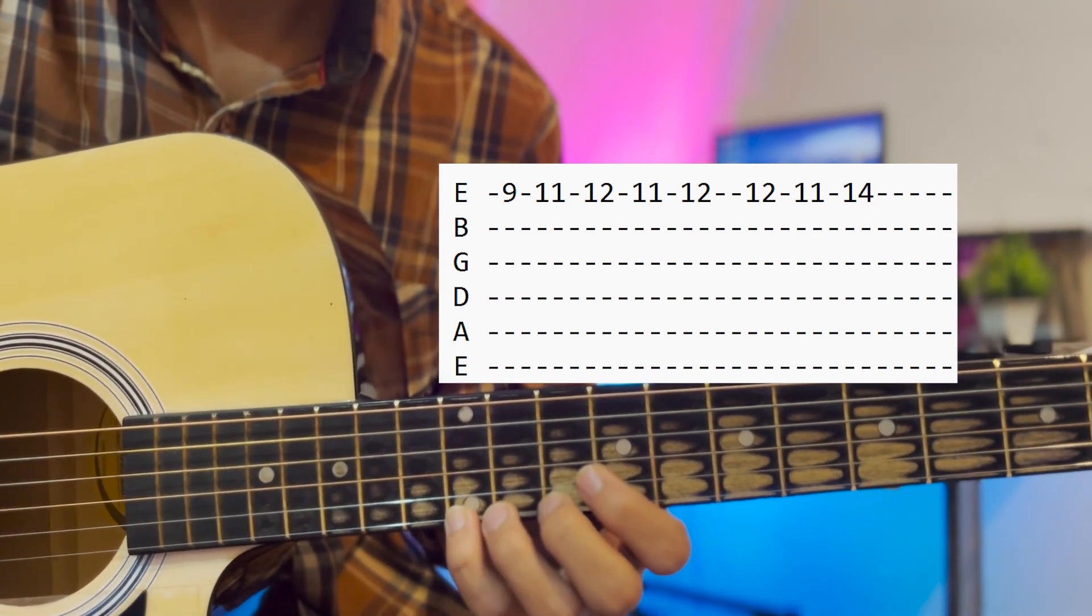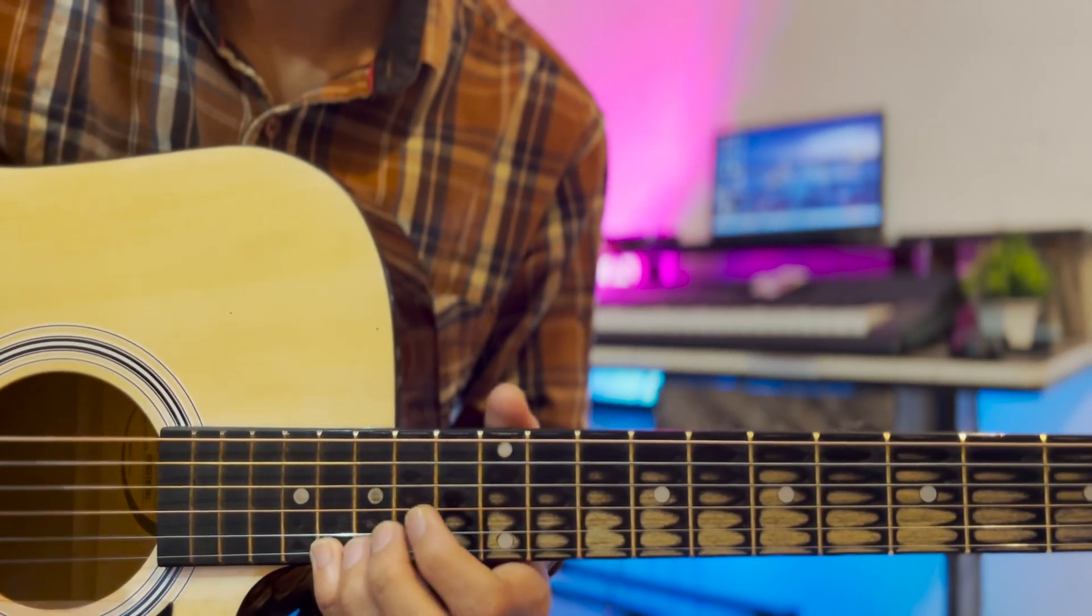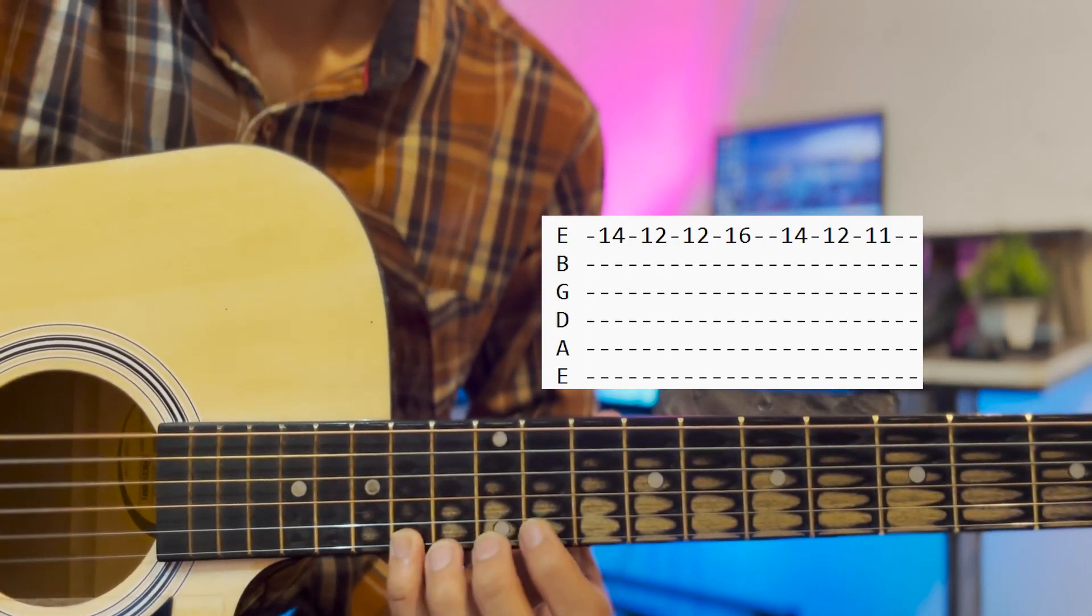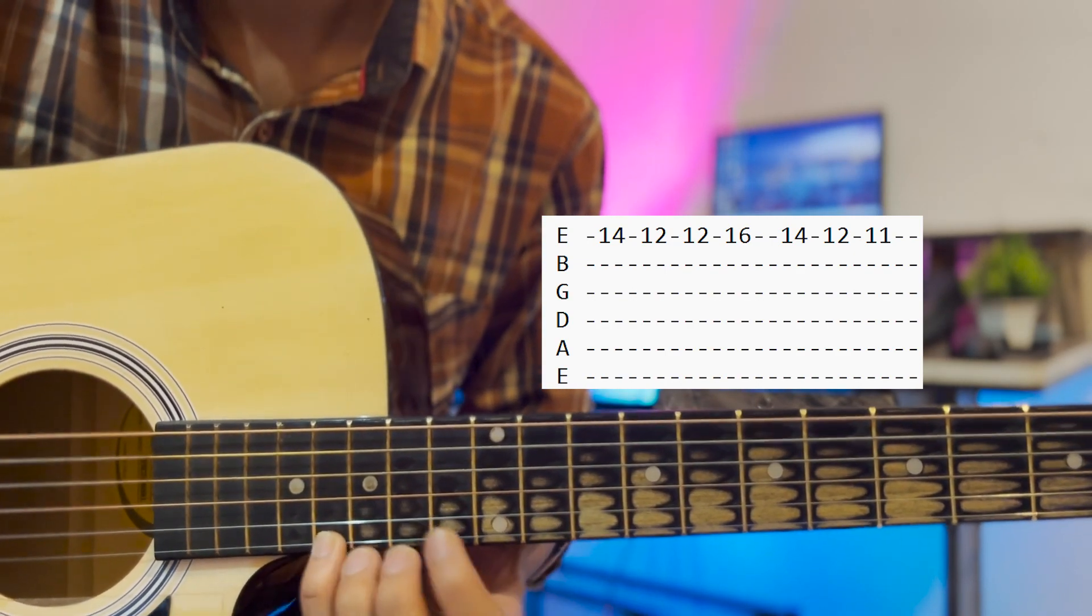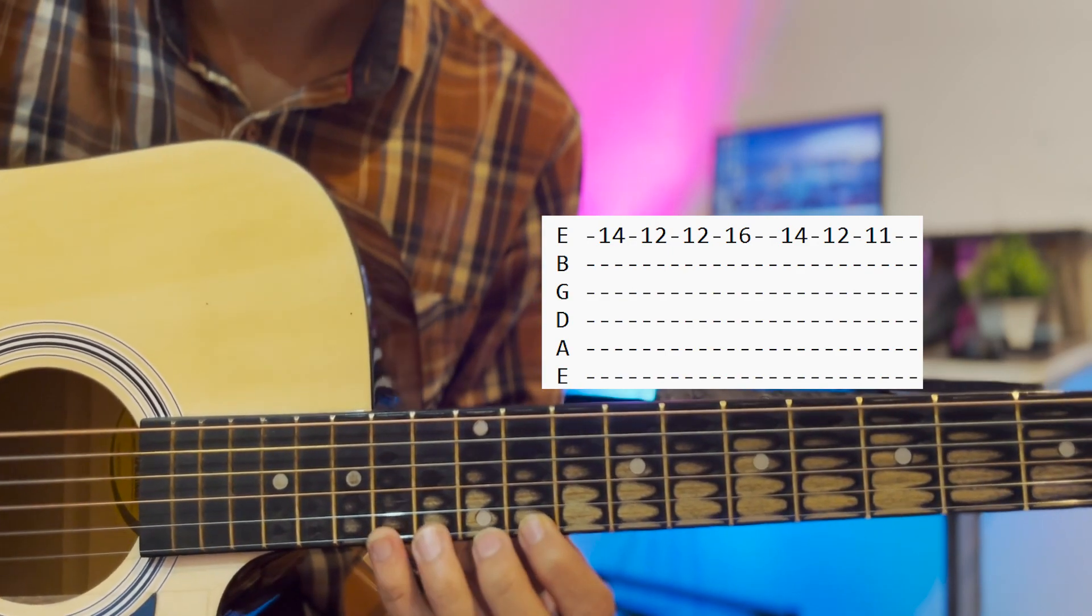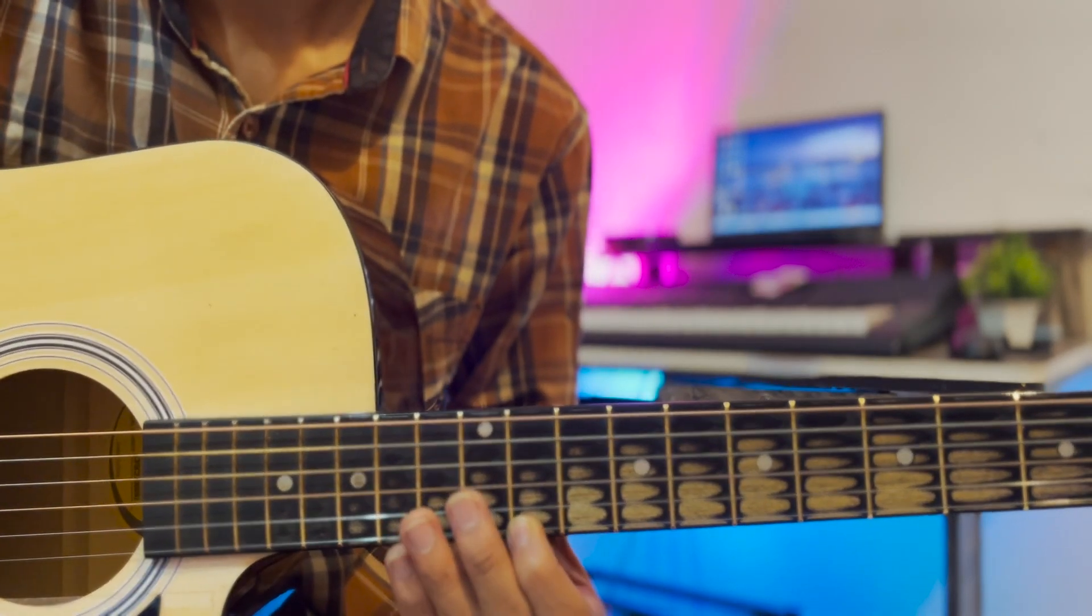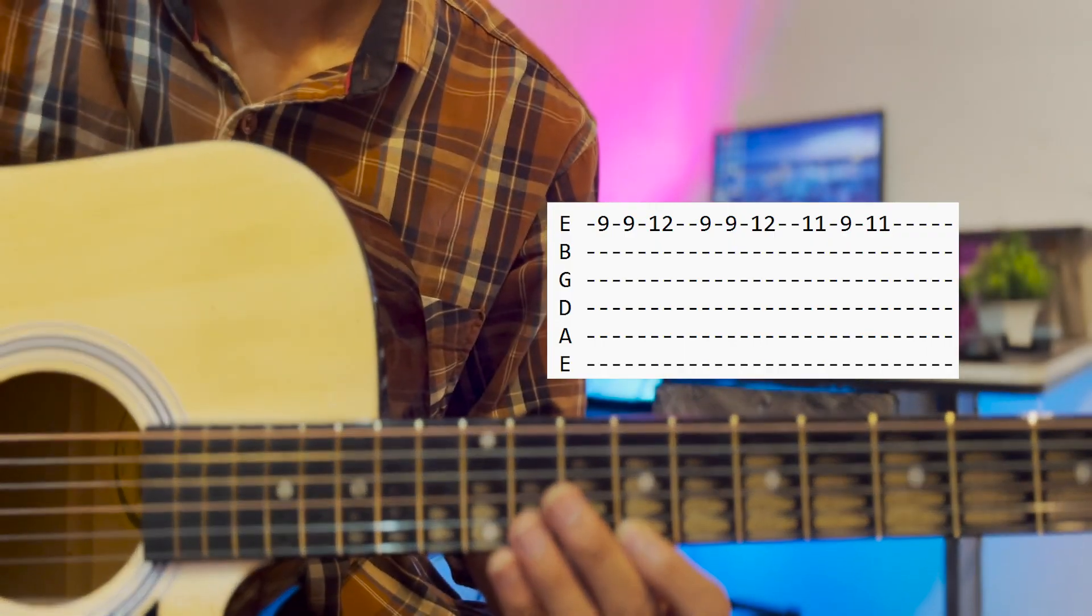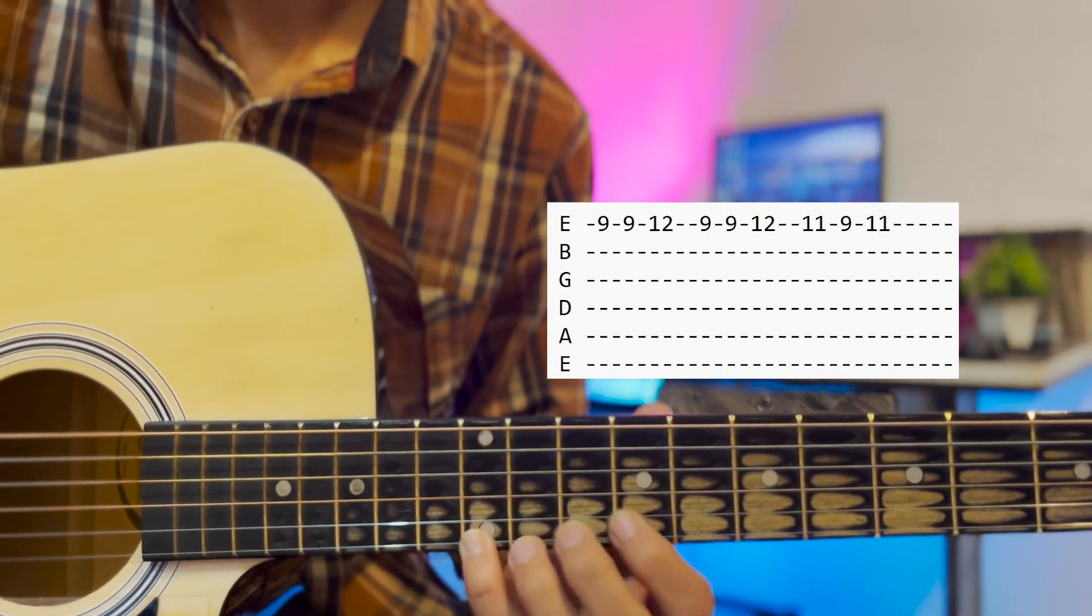First line, second line, we play the second line. So, first line starts from E14, E12, E12, E12, E16, E14, E12, E12, E16, E14, E12, E11.